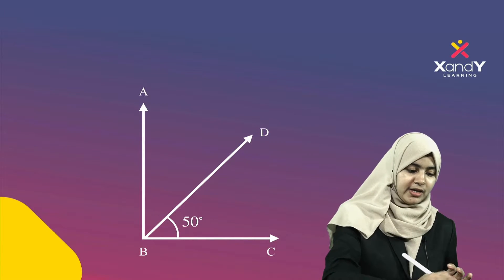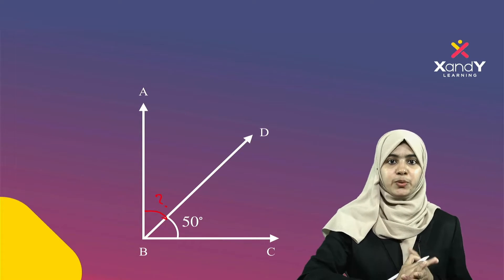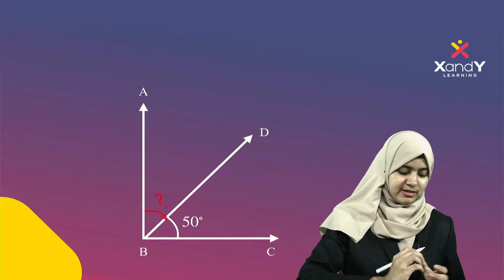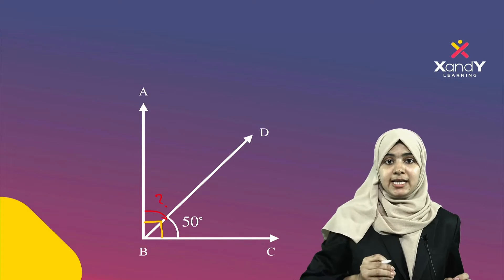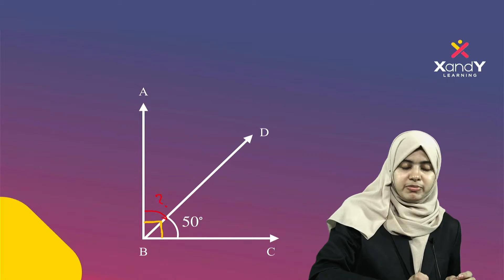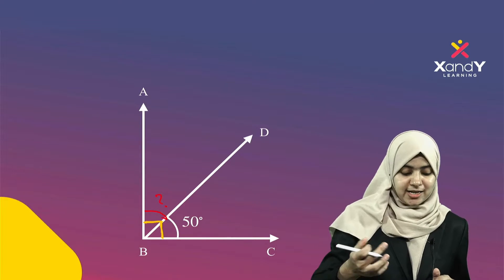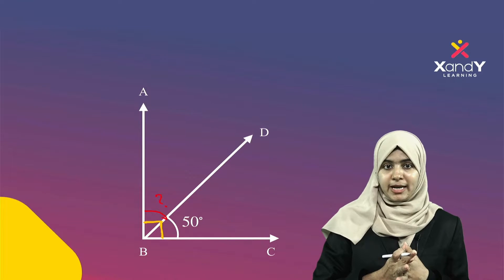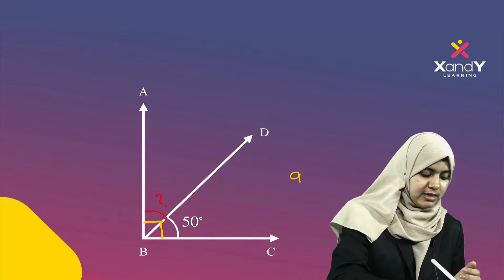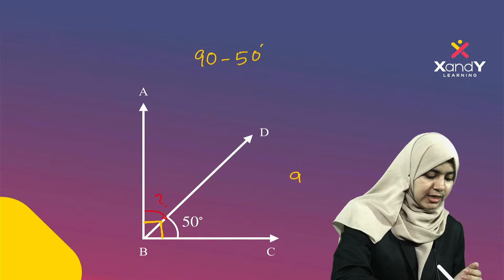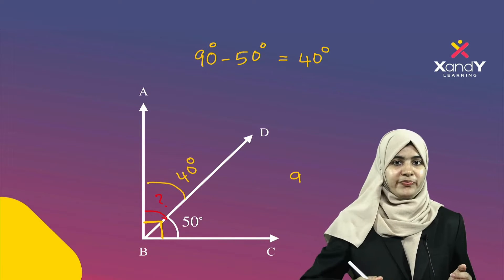What is angle ABD? We look at this angle right here. This angle is 90 degrees — that's perpendicular lines. AB is perpendicular to BC. So the total angle is 90 degrees. What is this angle? It is 90 minus 50 degrees, which equals 40 degrees. So this angle is 40 degrees.